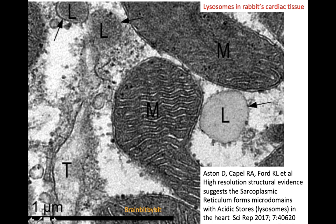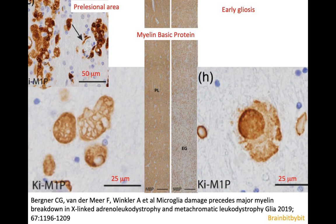The lysosomes in the macroglial cells are membrane-bound organelles with a close relation with the mitochondria, and they accumulate all the sulfatides that cannot be degraded in metachromatic leukodystrophy. If you look at the different areas under the microscope, you have the pre-lesional area stained for myelin basic protein with a lot of myelin, and the early gliotic area, which is not nearly as brown, so there's a lot of myelin loss. Zooming in to the macrophages and macroglial cells, you can see that in the pre-lesional area the macrophages already look different, and the macroglial cells as well. You see all these vesicles, which are probably lysosomes with the sulfatides stored in them.